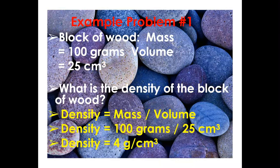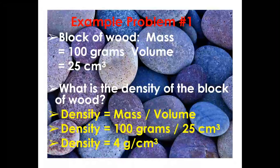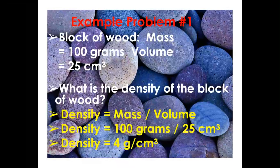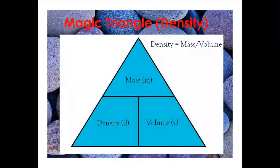Let's solve a problem: a block of wood has a mass of 100 g and a volume of 25 cubic centimeters. Using Density = mass/volume: 100 g ÷ 25 cm³ = 4 g/cm³. A useful tool is the density triangle, which places density, mass, and volume in a triangle so you can derive any formula: density = mass/volume, mass = density × volume, volume = mass/density.